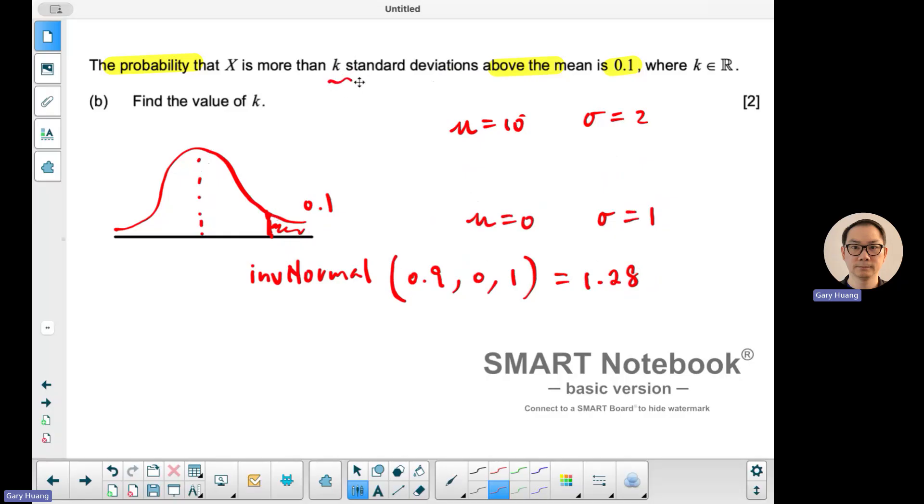It's 1.28 standard deviations away. So that's kind of like the trick here. If you use that, you're going to solve for the x value.